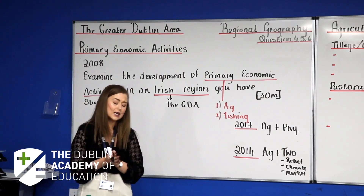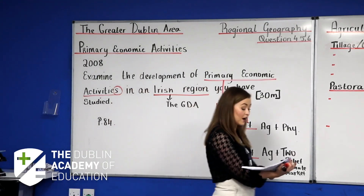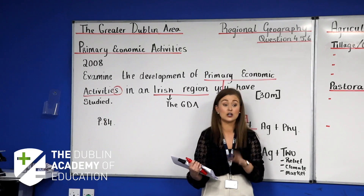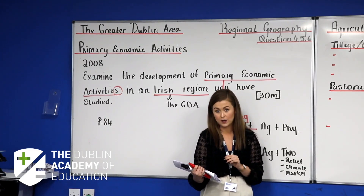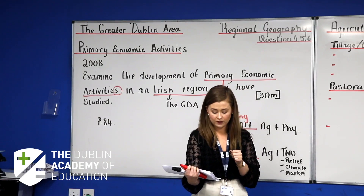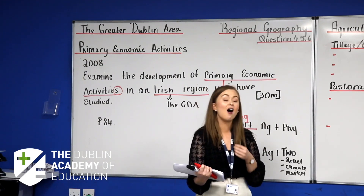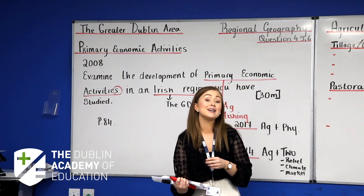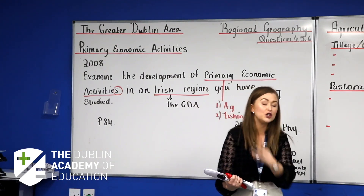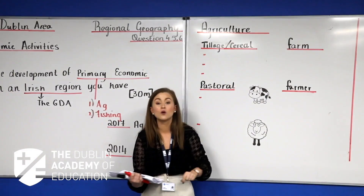Page 85 looks at agriculture within the Greater Dublin Area. We're going to get this really well done because there's a high possibility we'll see agriculture either in a European region or within an Irish region. It's the best essay to do because you can combine so many physical characteristics. Agriculture in the Greater Dublin Area is well-developed and highly productive due to many different physical factors. Note both physical and human factors.